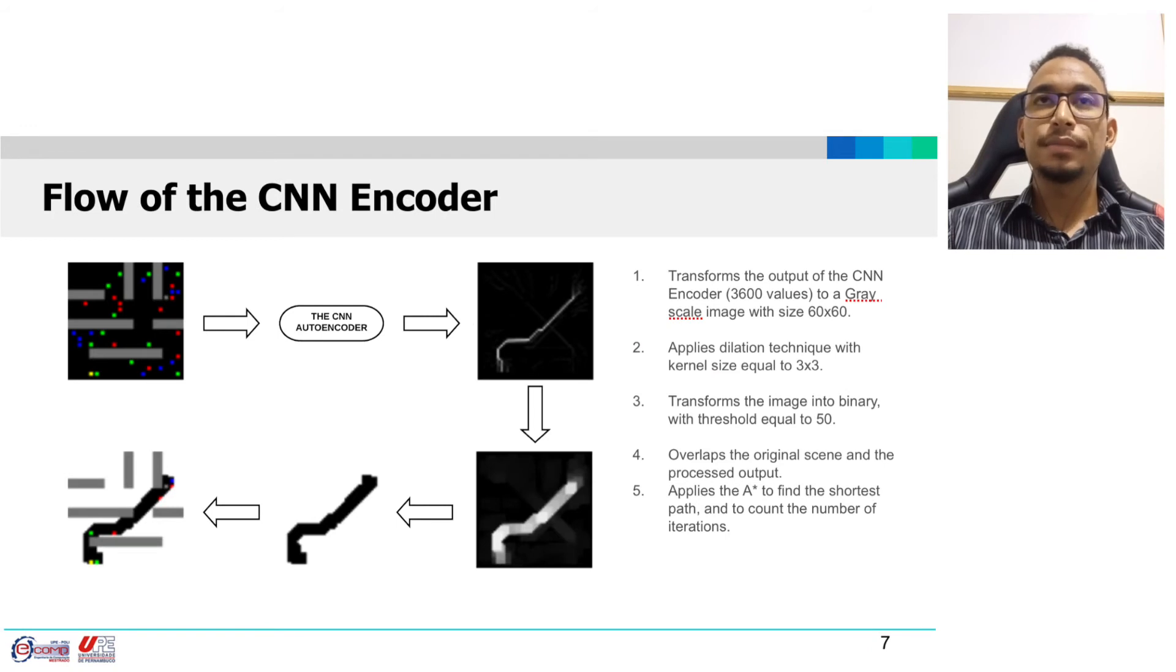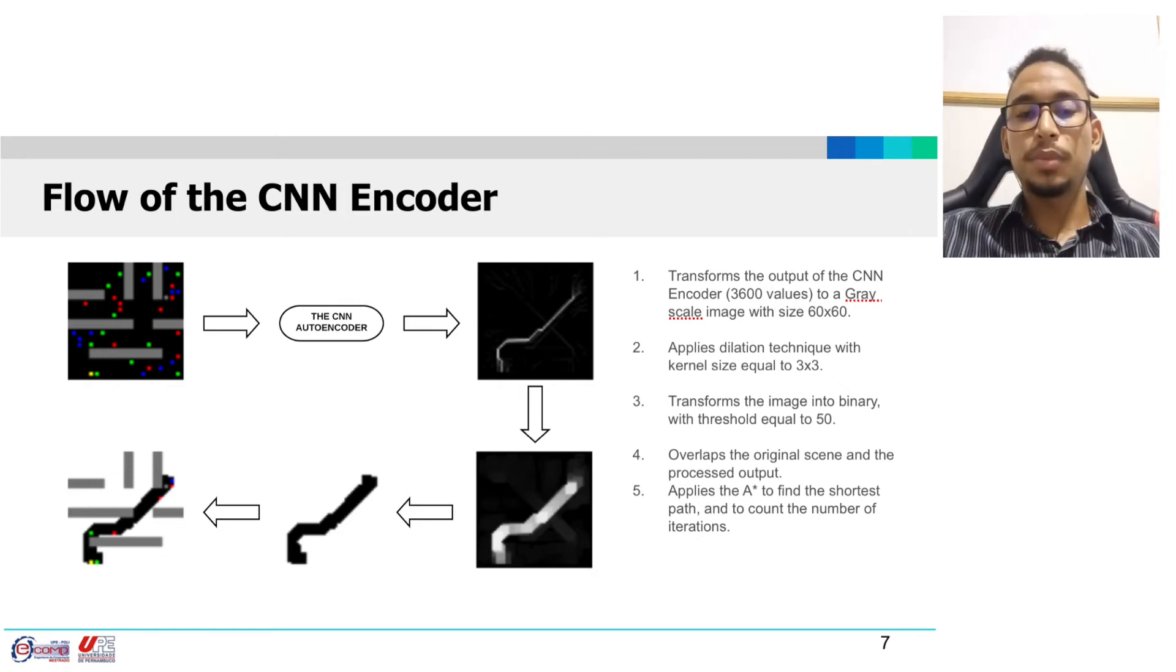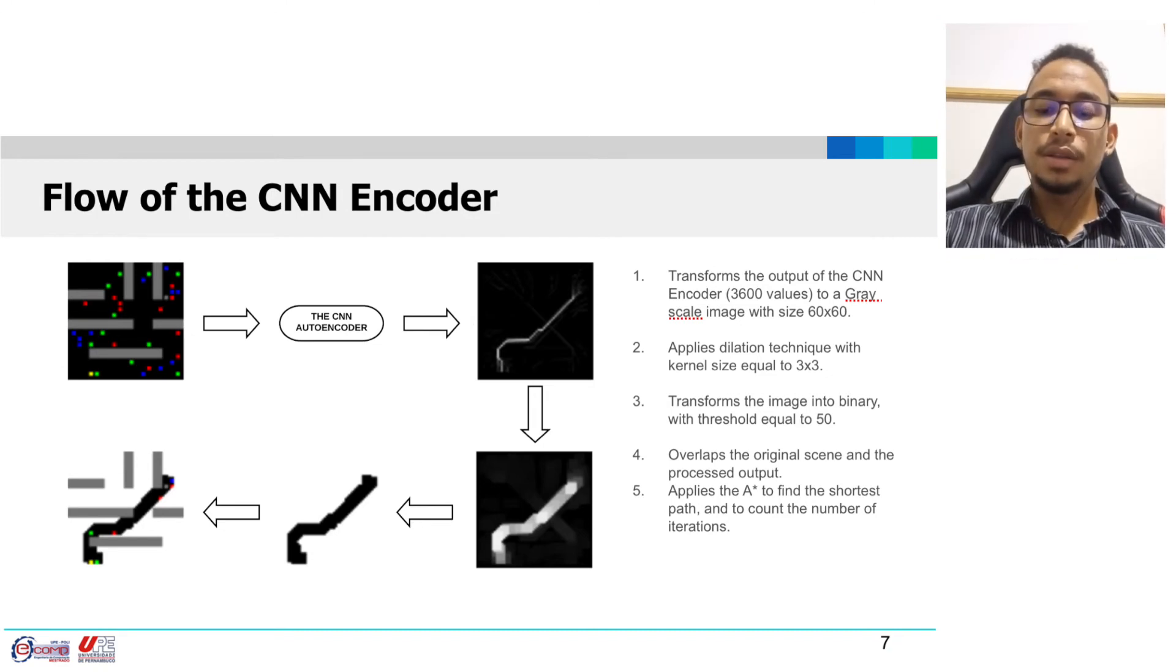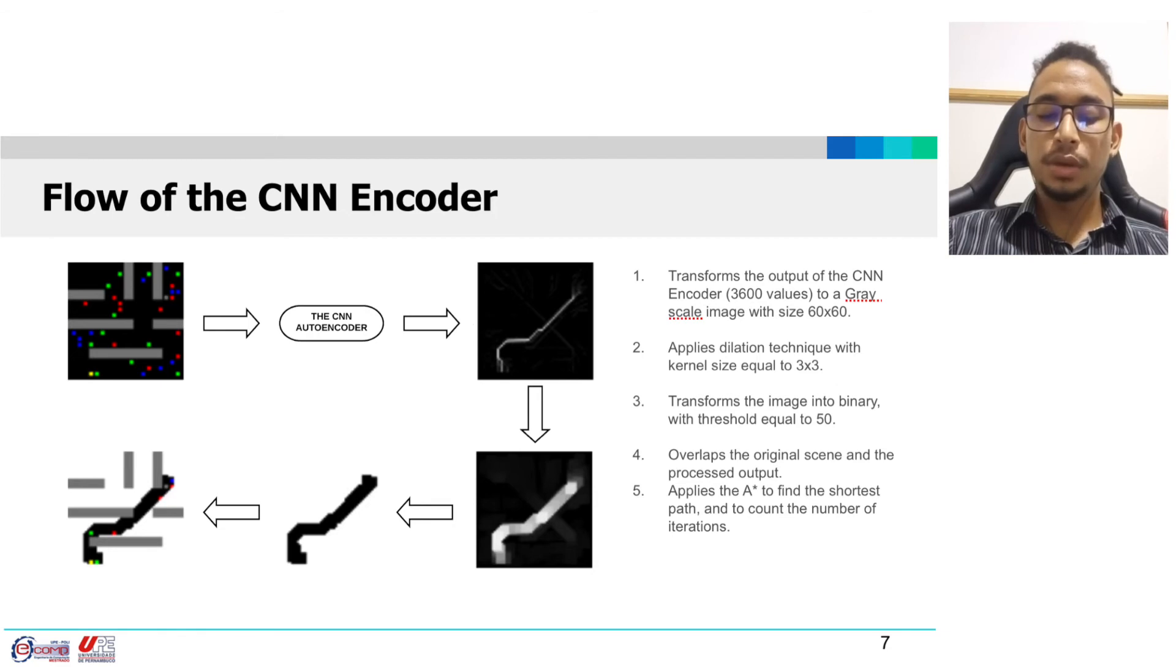The flow of the CNN encoder is: the input image, the output of the CNN encoder, and the preprocessing steps. The preprocessing steps are: transform the output into 60 by 60 matrix, apply dilation with kernel size equal to 3 by 3, transform the image into binary with threshold equal to 30, overlap the original scene and the preprocessed output, and finally apply A-star to find the shortest path and count the number of iterations.